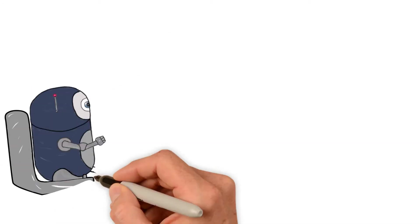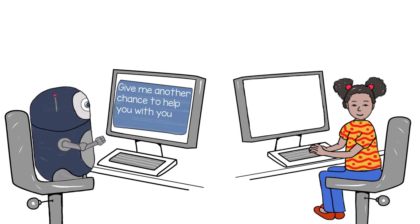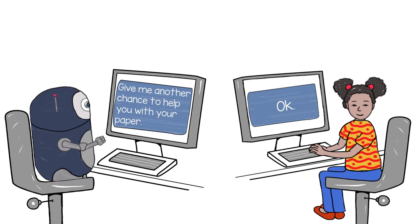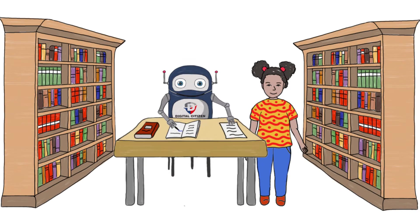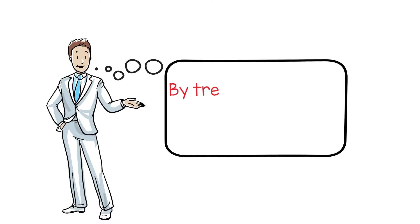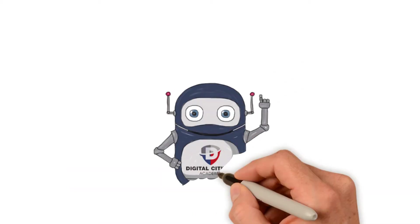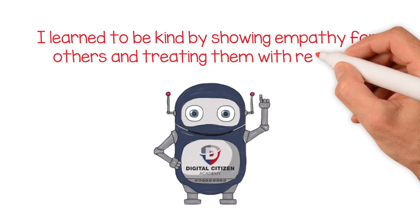Digi and his friend decided to write the girl an apology note to show that they were sorry for how they treated her. Although Digi was no longer a peer editor, he asked the girl for another chance to help her with her paper. She agreed, and he met with her in the library before school and helped her with her revisions. As they worked together, Digi found out that they had a lot in common. By treating her with respect, Digi was able to make a new friend. He learned to be kind by showing empathy for others and treating them with respect.